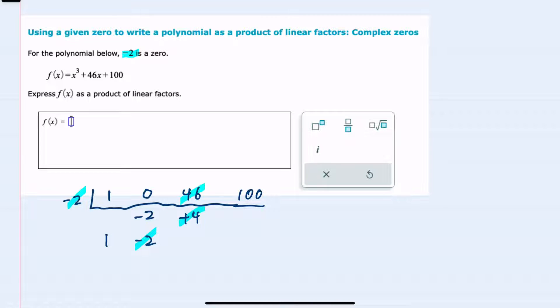Adding gives us 50. And then negative 2 times 50 gives us a negative 100. So it does divide in evenly.